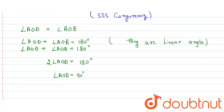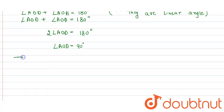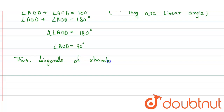Thus, the diagonals of a rhombus bisect each other at 90°.